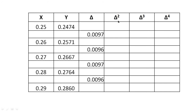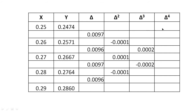The first order difference: Δy₀ = y1 − y0 = 0.2571 − 0.2474. The second order difference Δ²: for example 0.0096 − 0.0097 gives a negative value. We continue to compute Δ³ (third order) and Δ⁴ (fourth order differences). This completes the forward difference table.